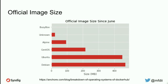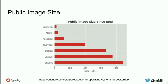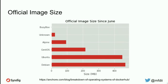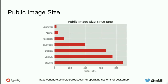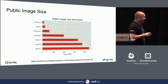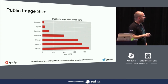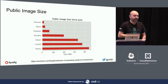So you pull down an official image and you're committed to 470 megs — of course, layering helps with some of that. And looking at public images on Docker Hub that other people have built: the average is about 870 megabytes for a container image.